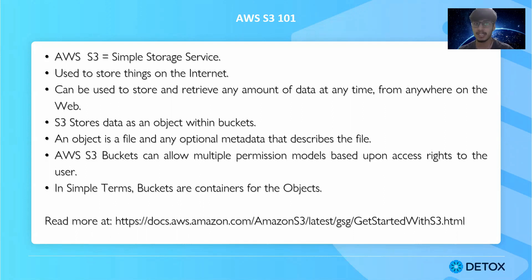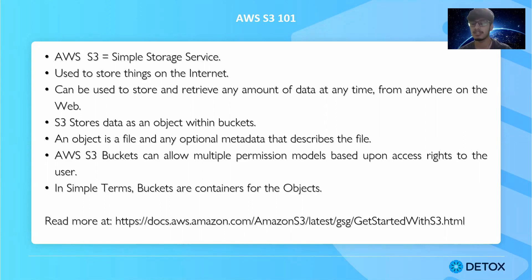An object is a file or any kind of data along with optional metadata. Metadata is basically data about the data — it describes what the data is about. For example, an HTML file might have a meta tag defining what that HTML file is about. AWS S3 buckets can allow multiple permission models based upon the access rights granted to the user.